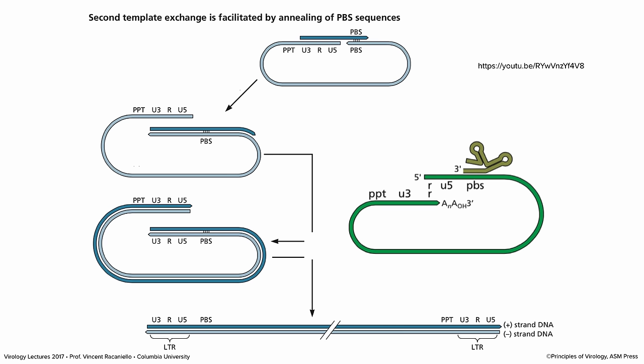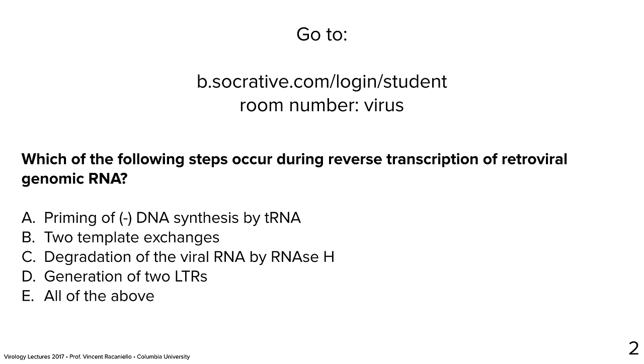Last year a lot of people were confused, so I made a little movie — an animation of this whole thing with nice music — and you can find it at the link also on CourseWorks. It shows you going through all these steps. You can watch it — it's only about two minutes — as many times as you need. Next question: which of the following steps occur during reverse transcription of retroviral genomic RNA? Options: priming of minus-strand synthesis by tRNA; two template exchanges; degradation of viral RNA by RNase H; generation of two LTRs; all of the above. The answer is E — all of the above.